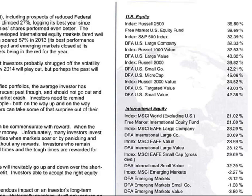Below that you're going to see other indexes such as the S&P 500 index, and then the DFA U.S. Large Company index. The first number where it just says 'index' is the overall benchmark we're comparing ourselves to, and the second one — the Free Market U.S. Equity Fund — shows how we did against that benchmark. For example, the S&P 500 index at 32.39% compared to the DFA U.S. Large Company index at 32.33%. All the way down the line you'll see the index first, like Russell 1000 Value, and then the DFA U.S. Large Value — that's how we outperformed that index by a significant amount.